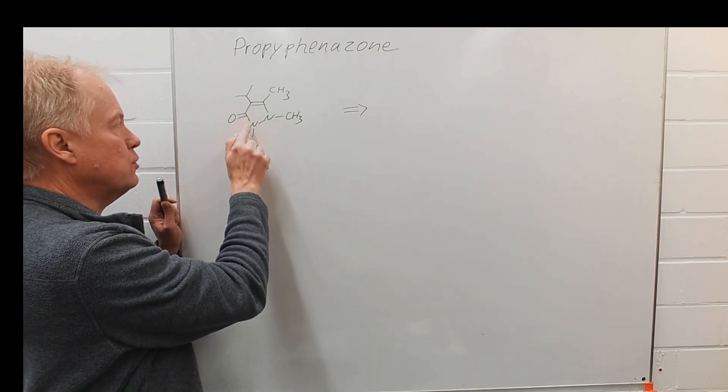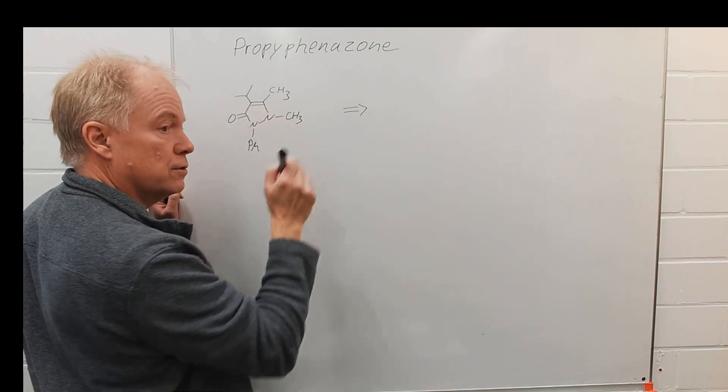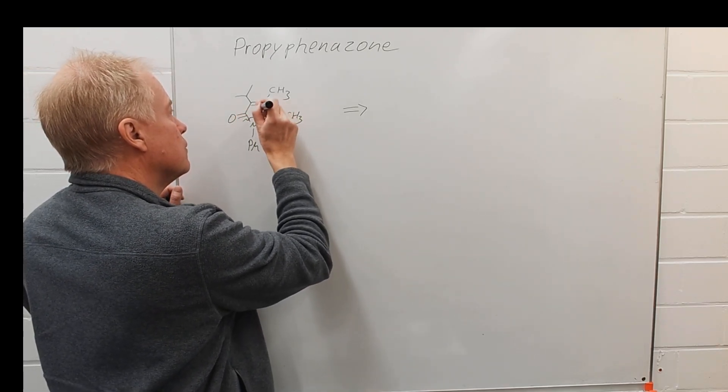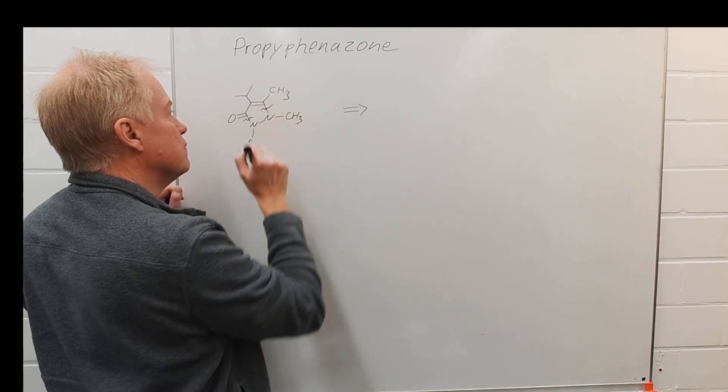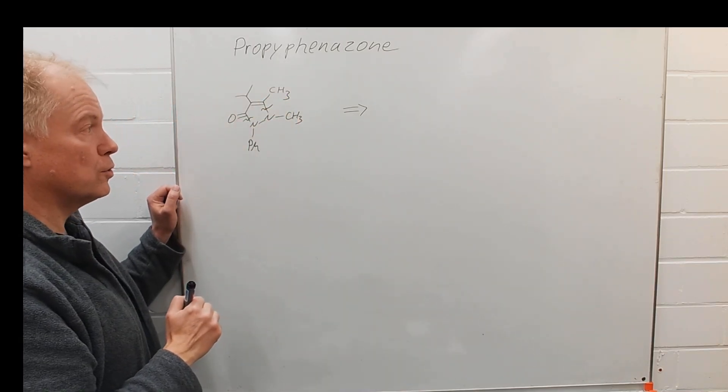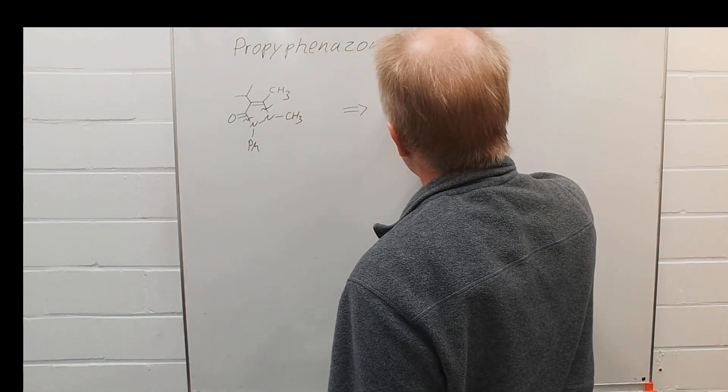Heteroatom-carbon bonds are easy to form and are generally regarded as strategic bonds. We should think about cleaving these bonds first within the retrosynthetic analysis and we will write down the structure of the synthons.